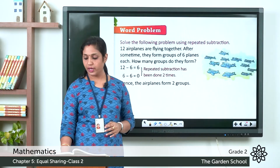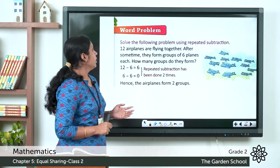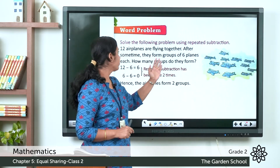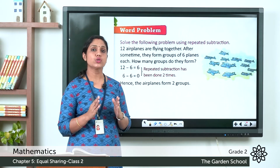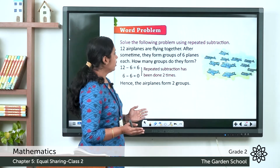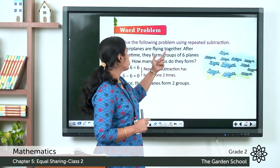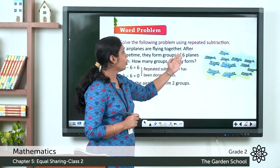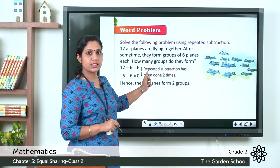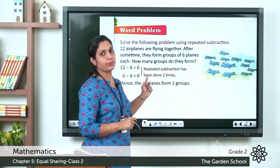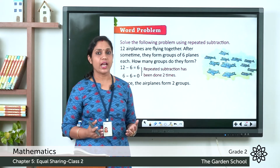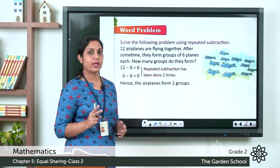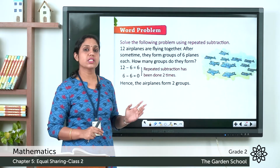In page number 66 you have a word problem: twelve airplanes are flying together. After some time they form groups of six planes each. How many groups do they form? First there are twelve airplanes, then they divide into groups of six. So: twelve minus six is equal to six, again six minus six is equal to zero. We subtracted two times, so the airplanes form two groups.